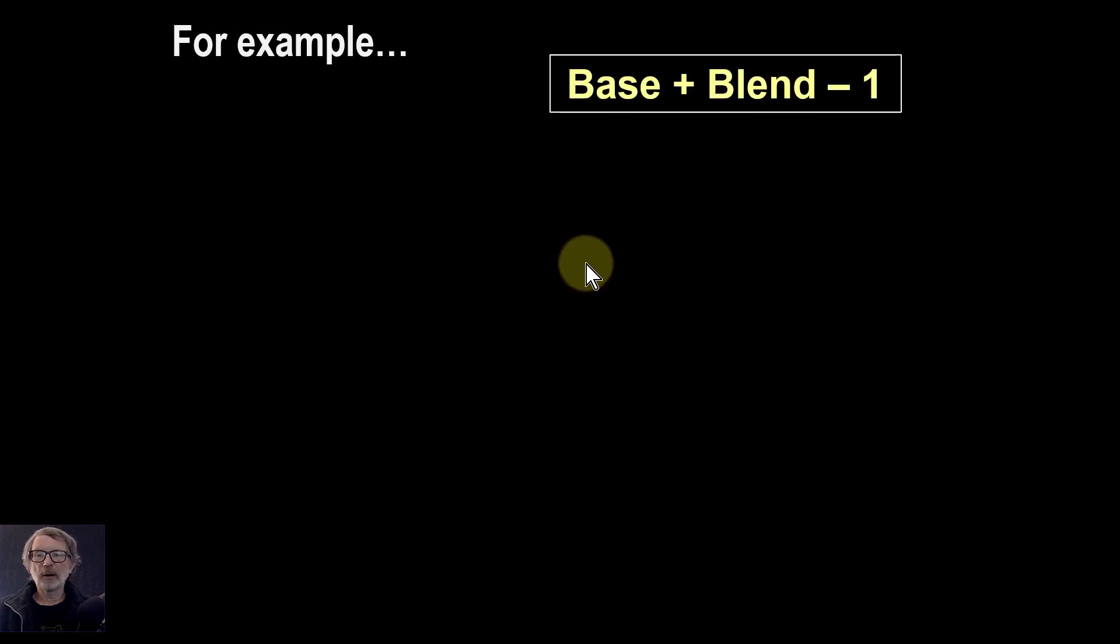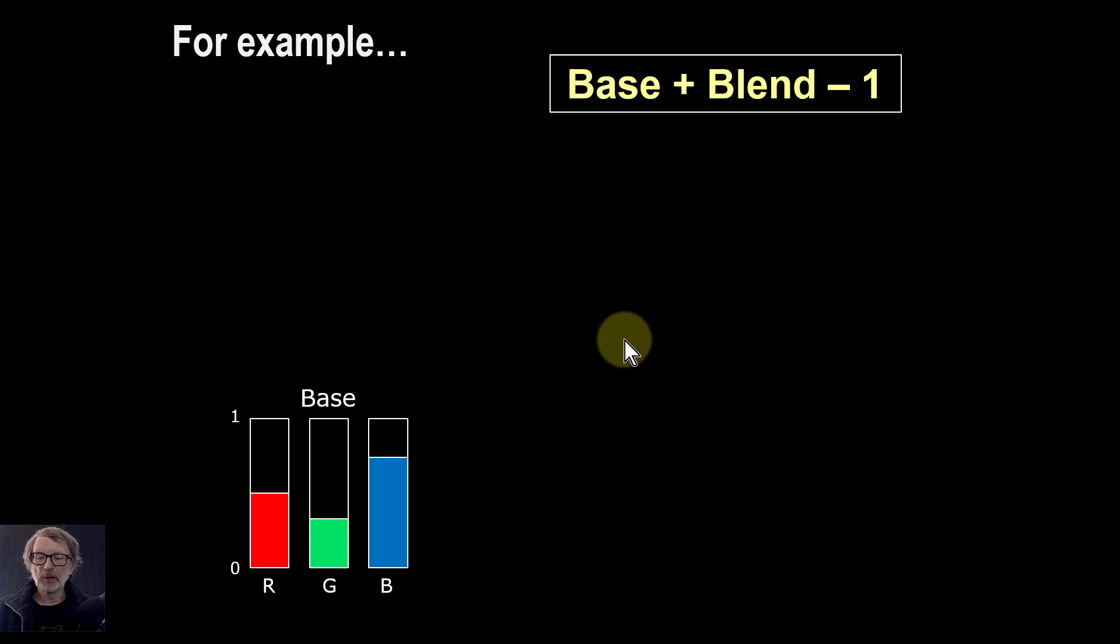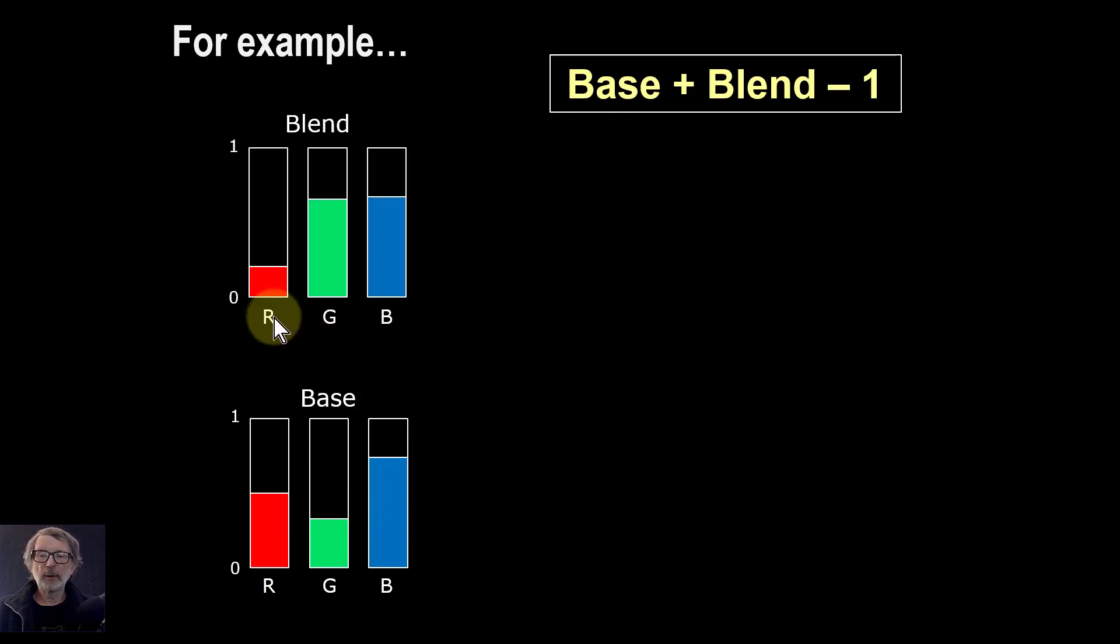So as an example of how we do that, here's a base layer with red, green and blue in that. And blend layer, red, green and blue there, so reasonable colours in those.